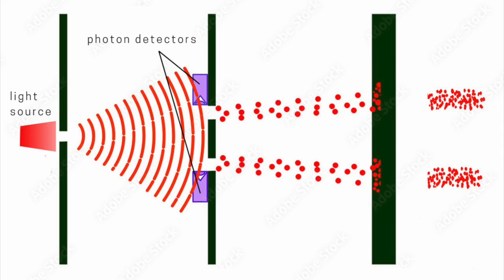Somehow, the existence of the interference pattern is tied to a lack of knowledge as to which slit the photons actually went through. If we don't ask where the photon is, it behaves like a wave. If we insist upon knowing, it behaves like a particle.